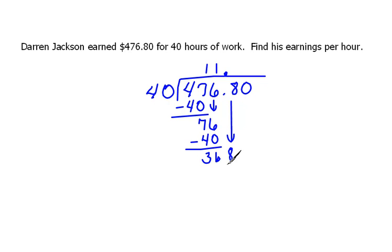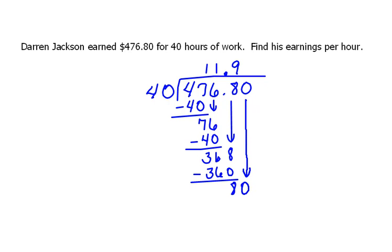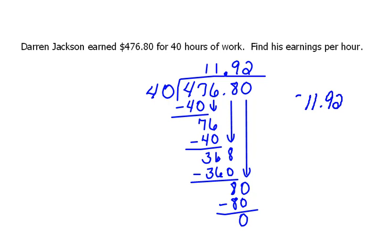40 will go into 368 nine times. 9 times 40 is 360. When we subtract, we get 8. Drop our next digit. 40 will go into 80 two times. 2 times 40 is 80, and that goes in evenly. So his earnings per hour would be $11.92 per hour.